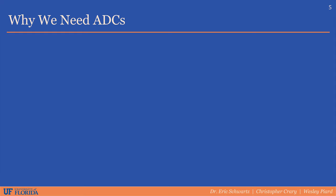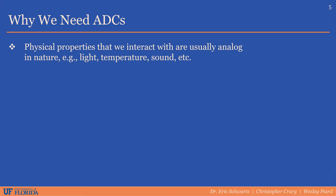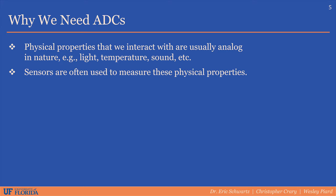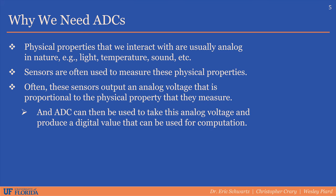Most physical properties in the world we live in, such as light, temperature, and sound, are analog in nature. Devices such as sensors are used to measure and quantify these physical properties — this is a very common use case for analog-to-digital converters. Data from these sensors, which is often output as analog voltage levels, can be converted and stored digitally for computation.